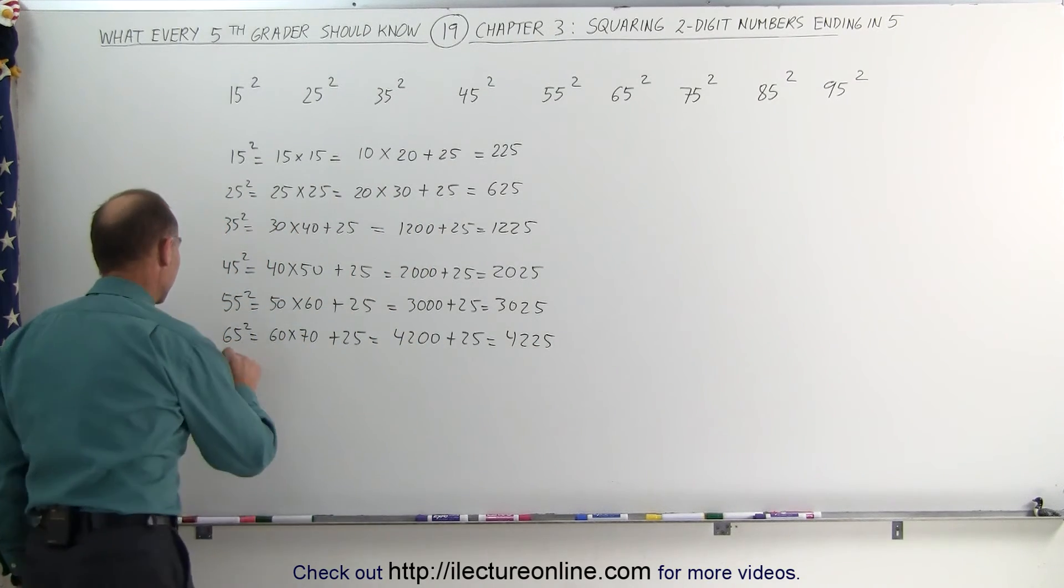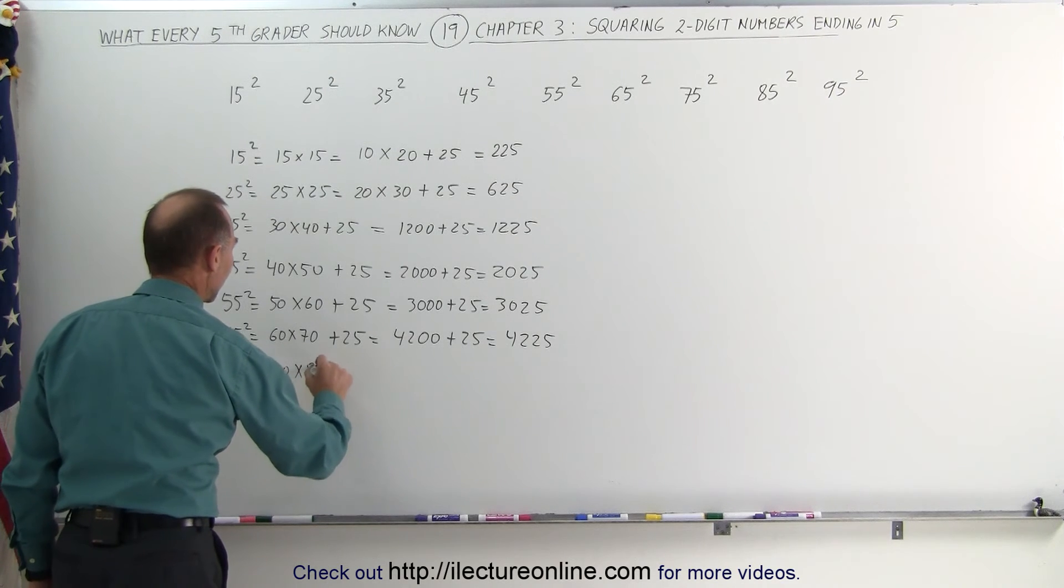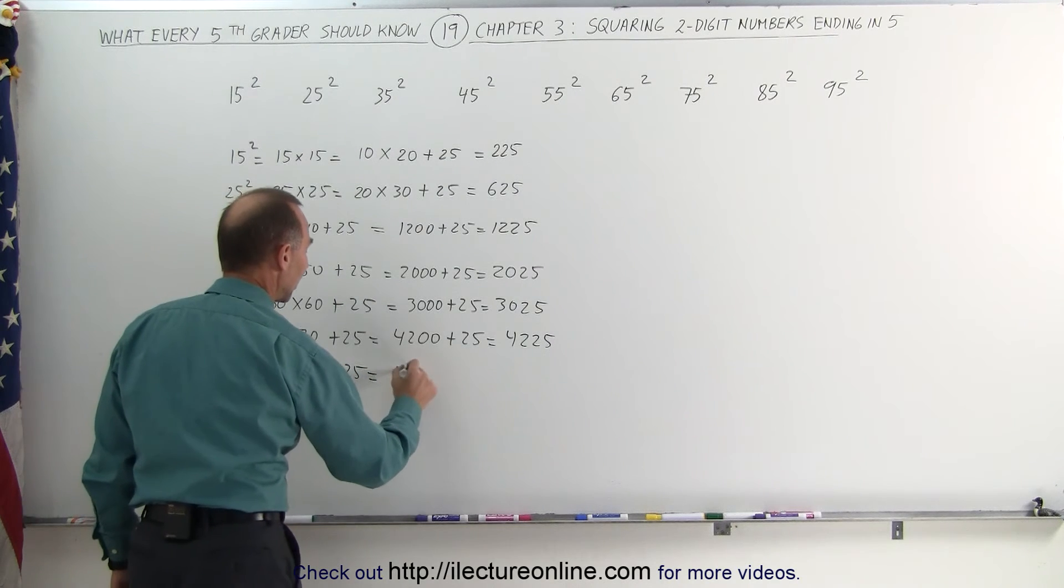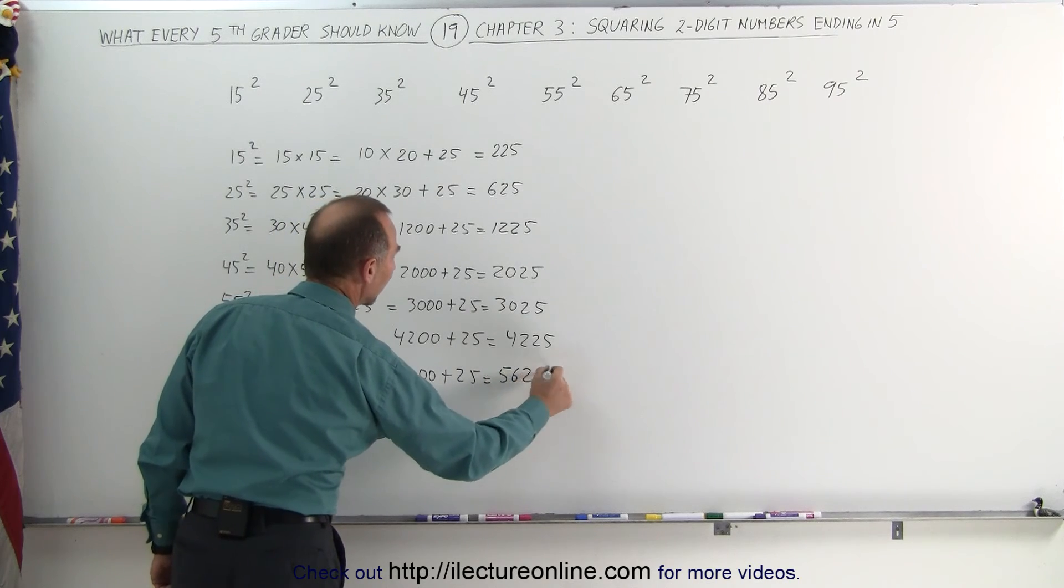Now 75 squared. 75 squared is the same as 70 times 80, plus 25. 7 times 8 is 56, add 2 zeros, add 25 to that, you get 5,625.